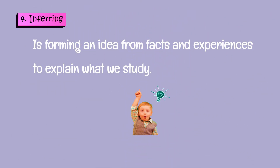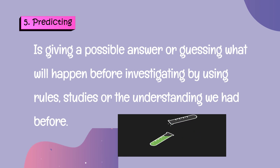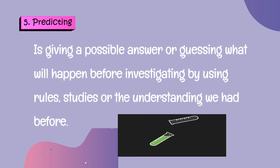Number four, inferring: forming an idea from facts and experience to explain what we study. Number five, predicting: giving a possible answer or guessing what will happen before investigating, by using rules, studies, or the understanding we have before.